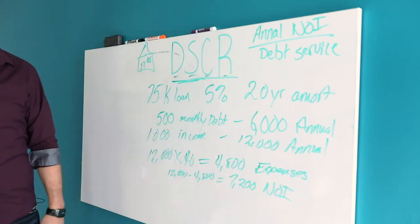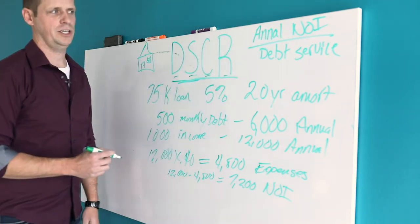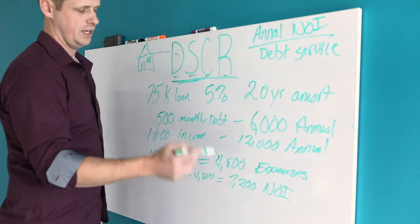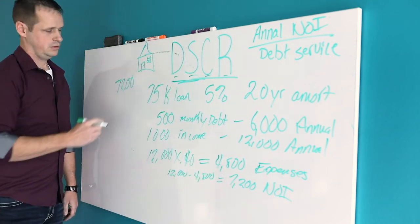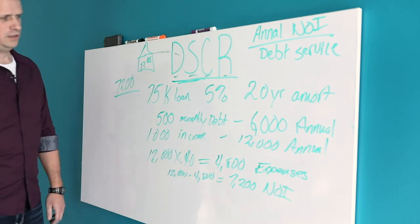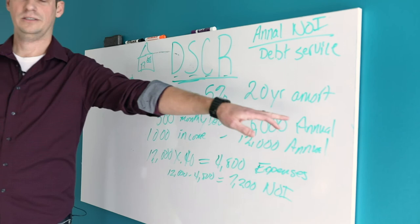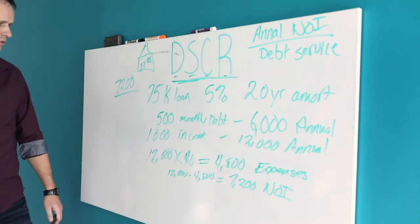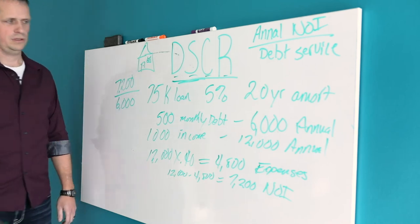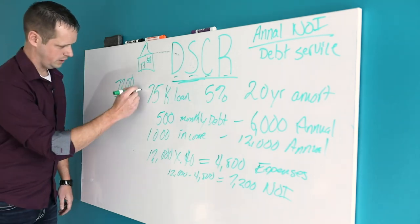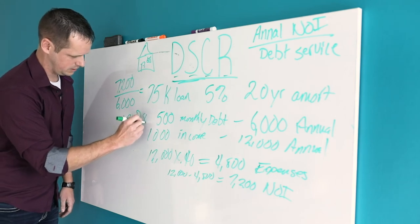So now we've established what our net operating income is, $7,200. This is before debt, obviously. So let's calculate what our debt service coverage ratio is. To do that we need our annual NOI, which is $7,200, divided by the cost of our debt. $500 monthly, $6,000 annually. So divided by $6,000 gives us 1.20 DSCR.